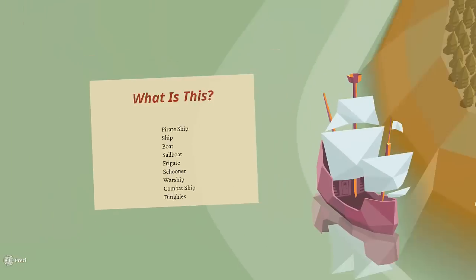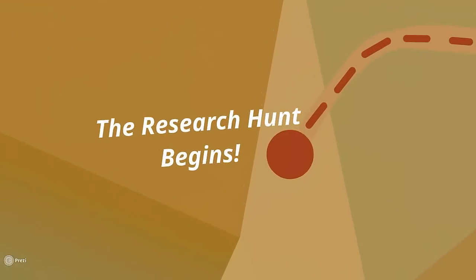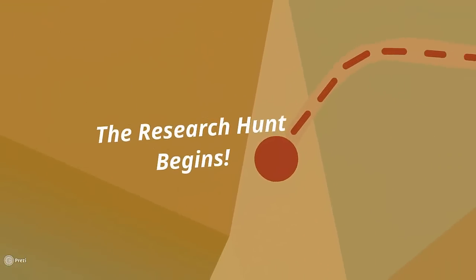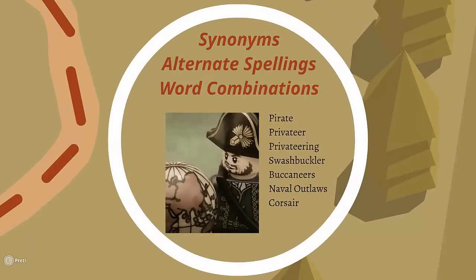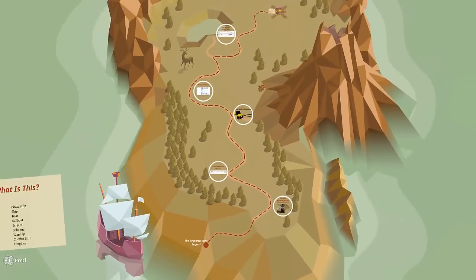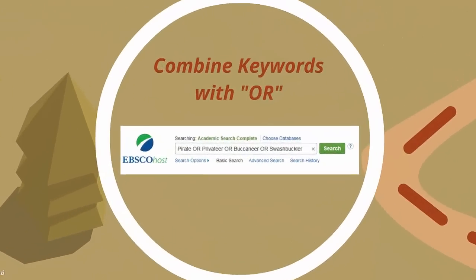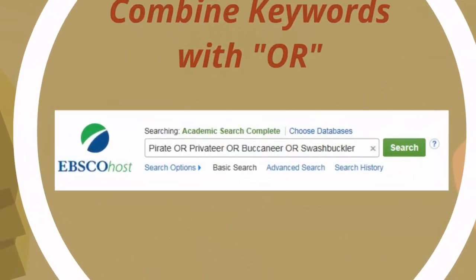When you're doing research, try to think of lots of different words and phrases to describe your research topic. Think of synonyms, alternate spellings, or combinations of words that define it. Don't be afraid to do lots of searches to see what combinations work the best. Also, remember that you can use the OR boolean operator between keywords in a search so that you can search several of them at once.